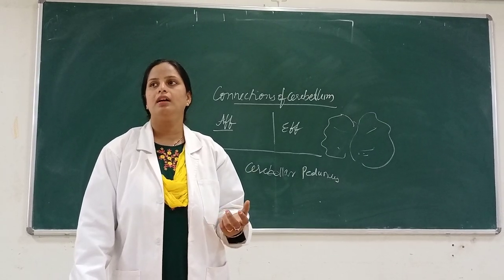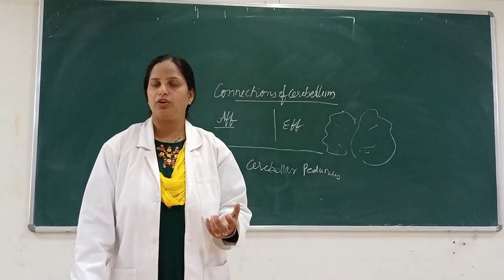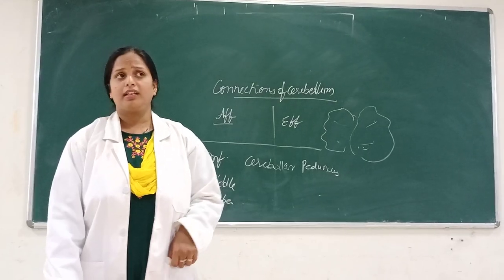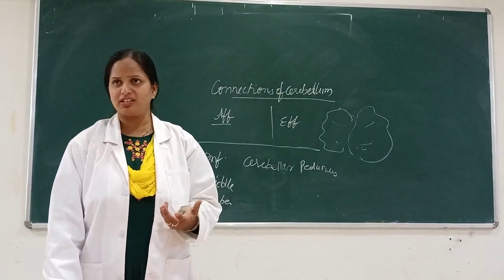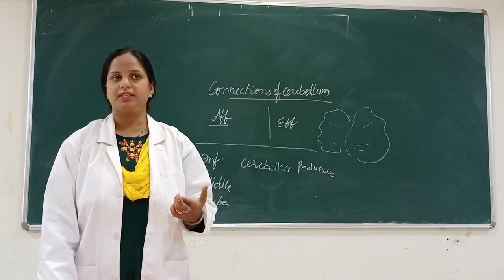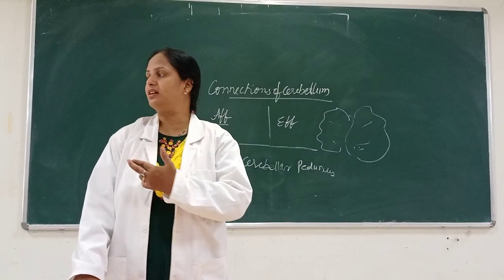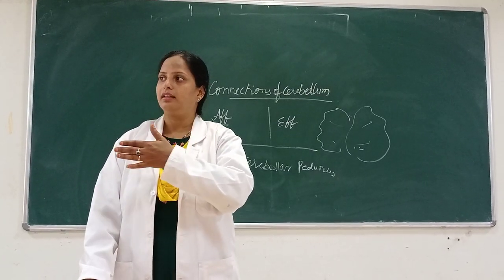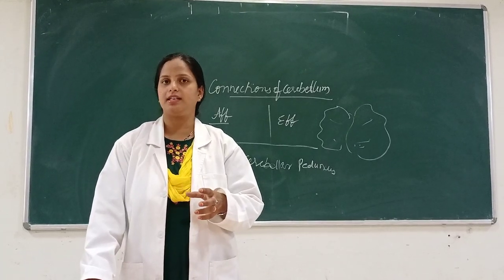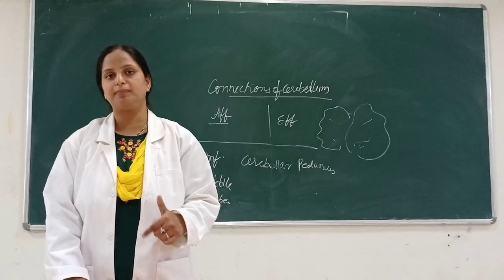A physiological example of nystagmus is optokinetic nystagmus — for example, when travelling in a moving train and focusing on a particular object, you can see nystagmus. That is optokinetic nystagmus, which is physiological. But cerebellar nystagmus is pathological.